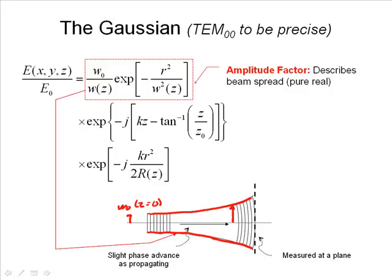Because w-naught is defined at z equals zero. And out here at some other place in the beam, we have w of z. So this first term, the amplitude factor, describes how the beam gets bigger as it propagates through space.